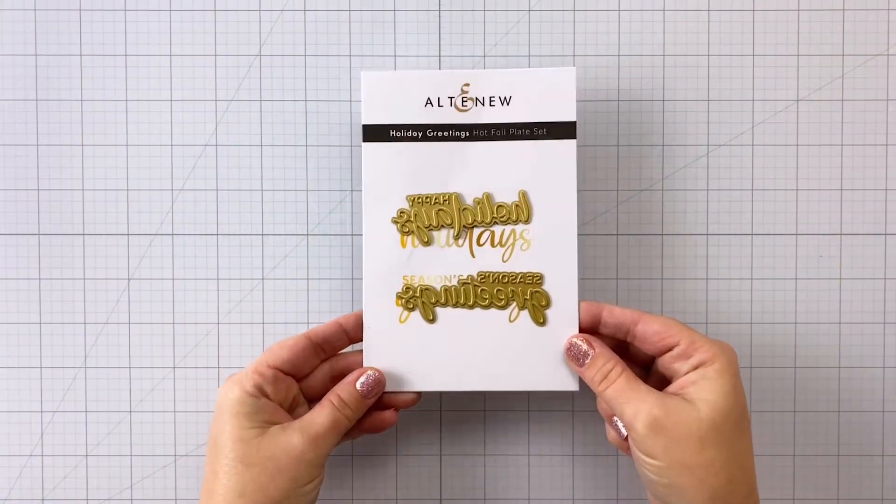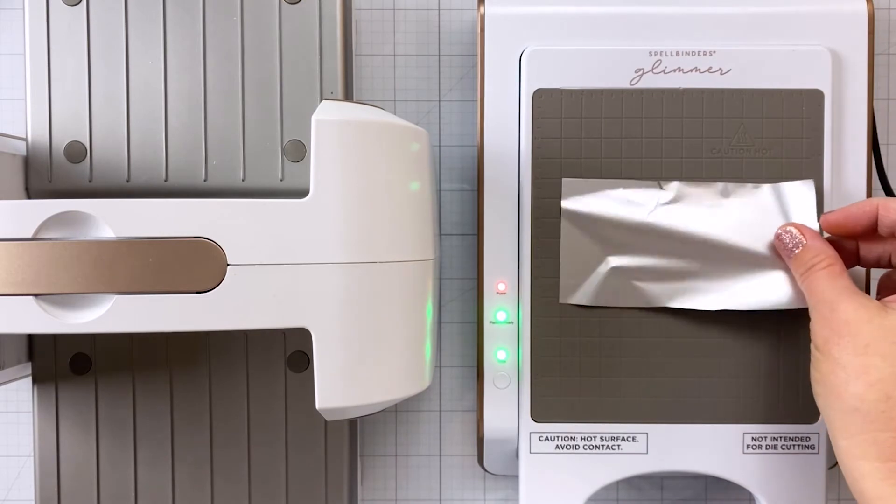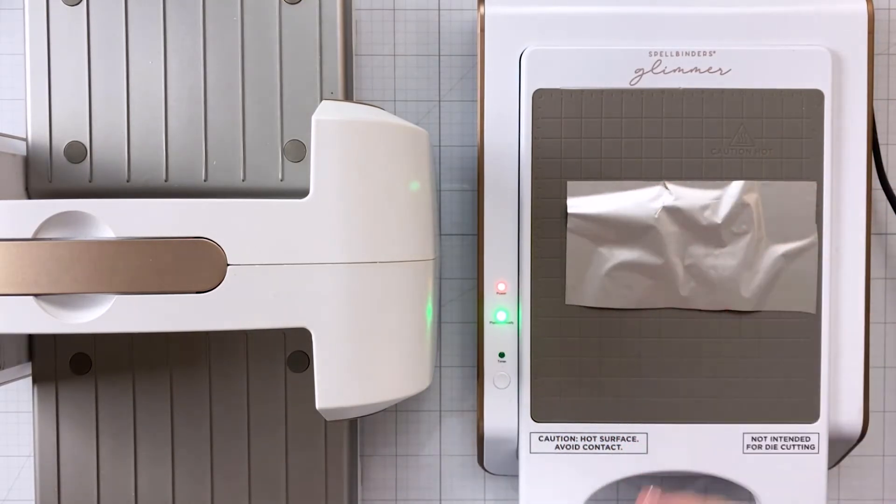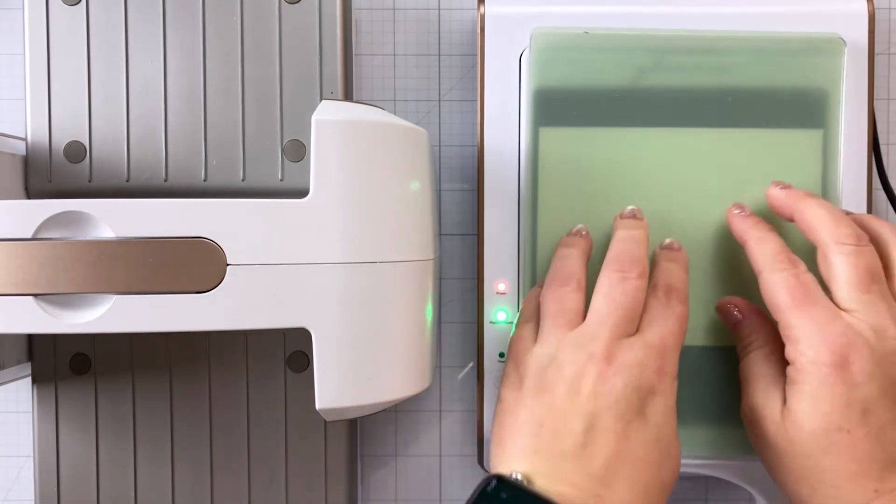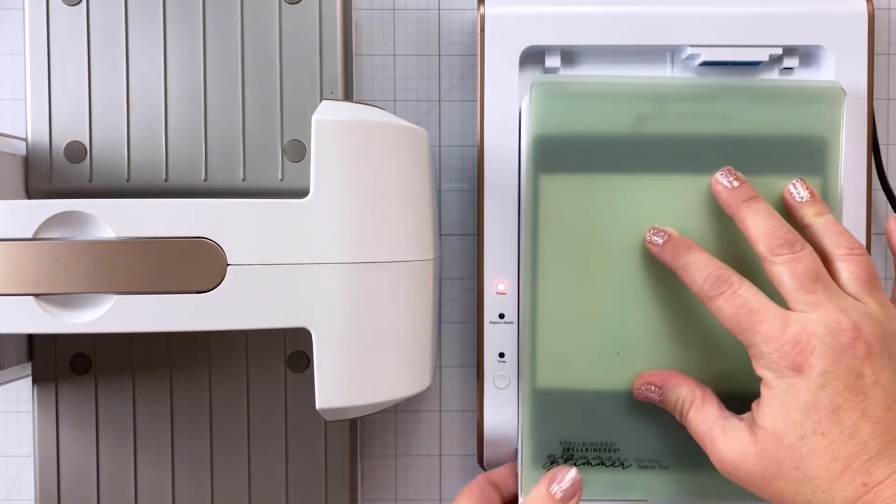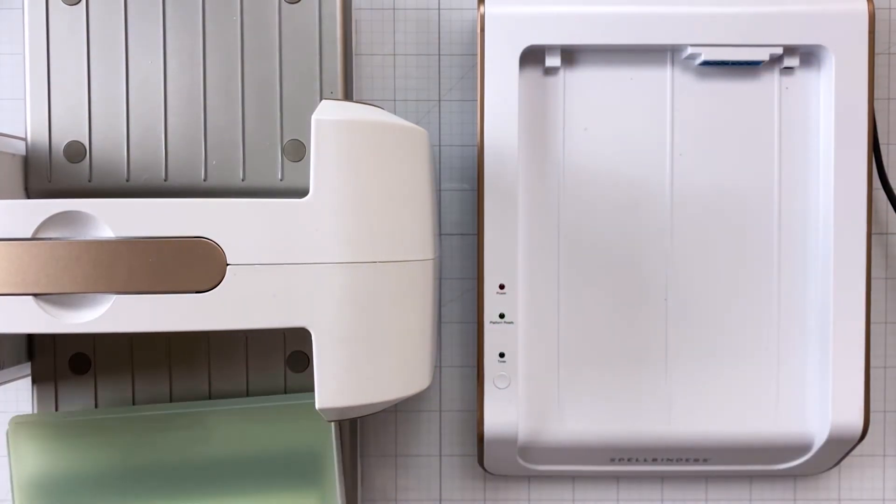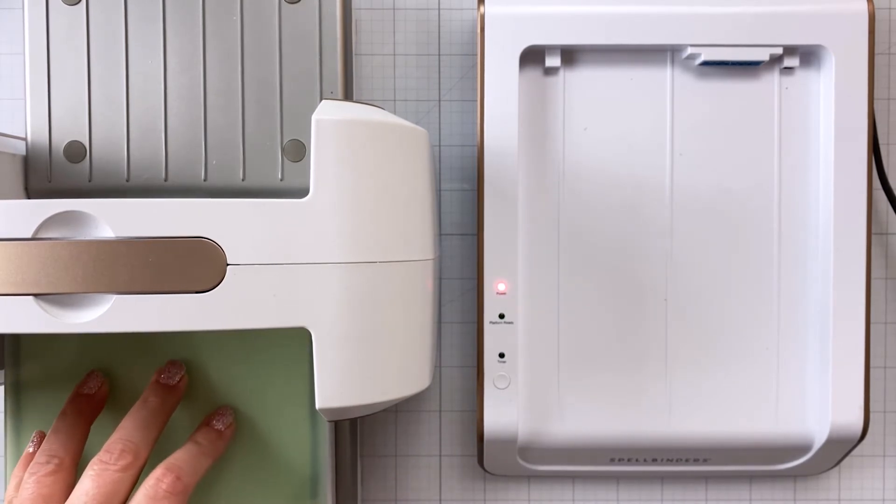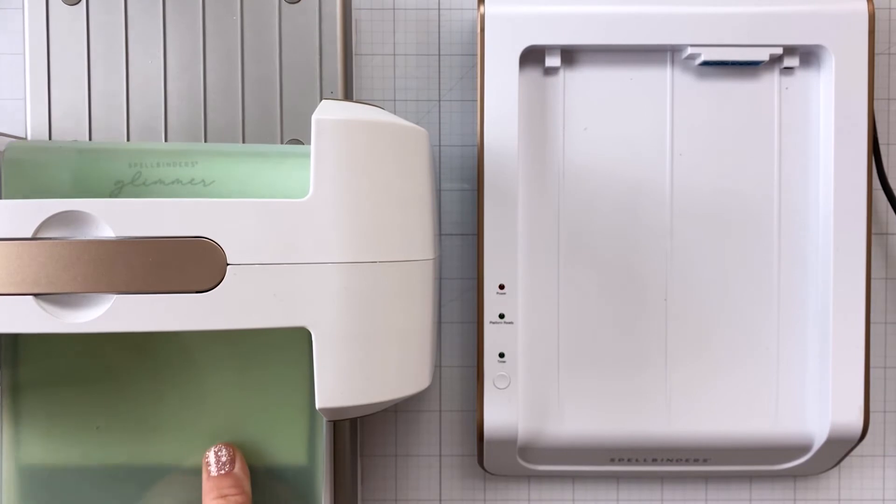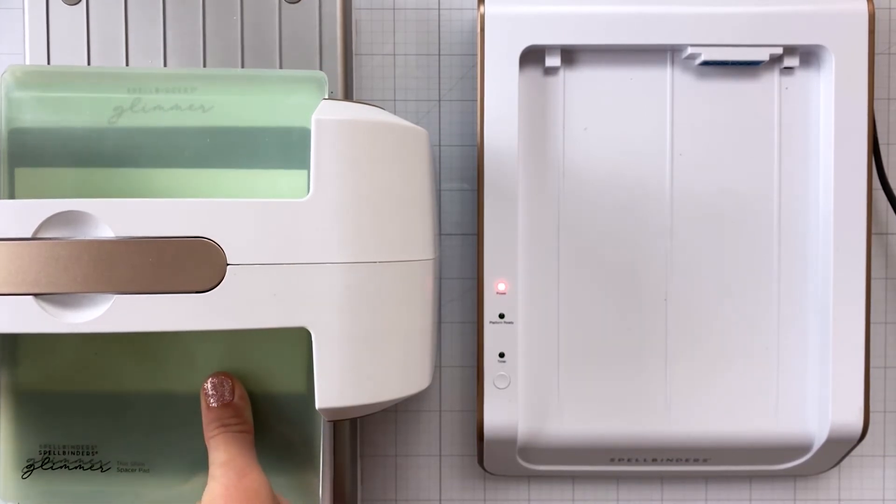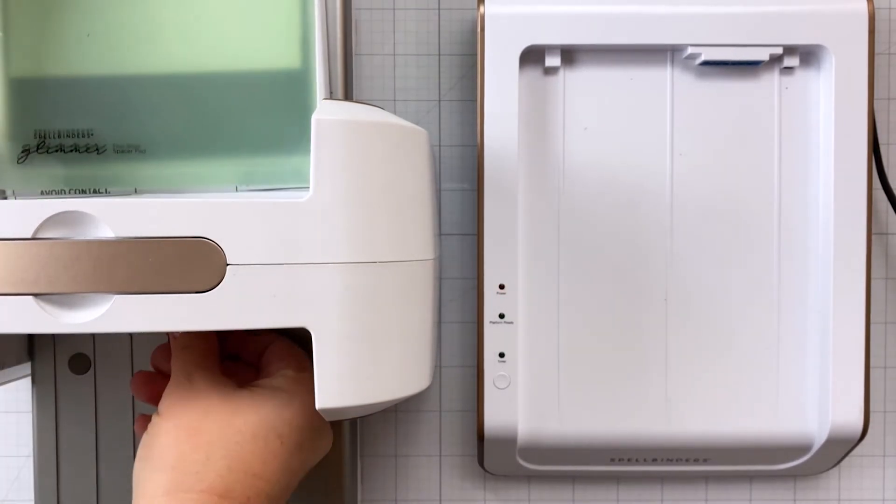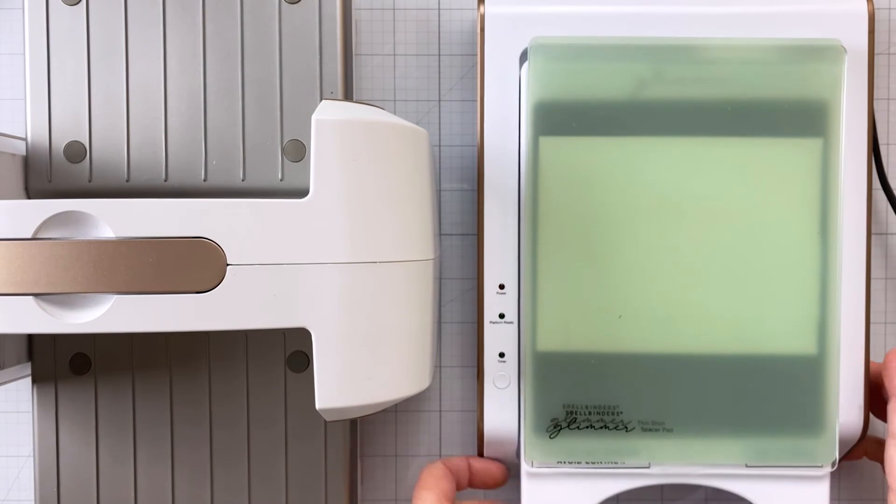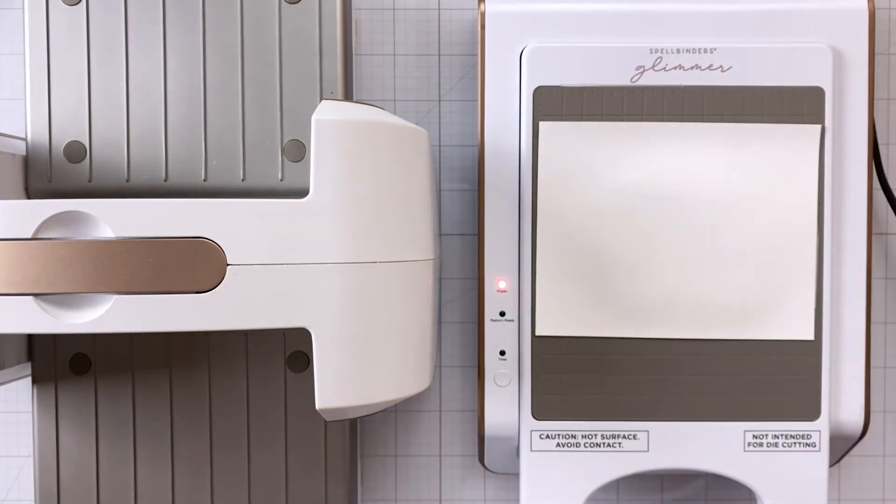Now I'm going to use these gorgeous hot foil plates from Altenew. It's the Holiday Greetings Hot Foil Plate Set. I put them down here on my glimmer machine and then added some silver glimmer foil and then a piece of cardstock. Then my shim and my top plate, hit the timer button. Through the magic of video editing, you do not have to wait for the timer to finish. So then I just run it through my Spellbinders Platinum 6. And it's just easy, so simple to hot foil. I think it can be kind of intimidating, but my main tip for you on that is to just run it through one time. You don't need to run it through multiple times. I find that I get the best result if I just run it through there one time.